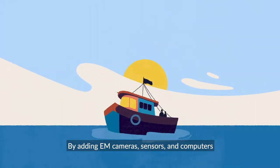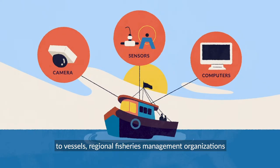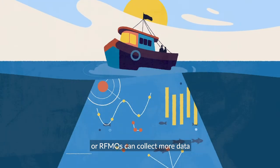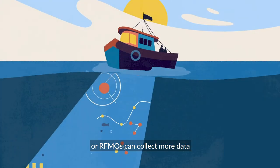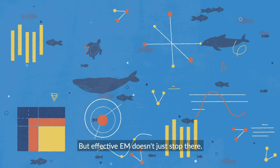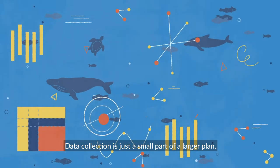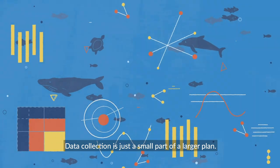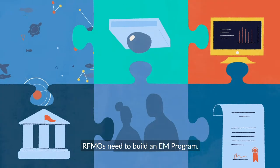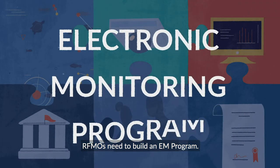By adding EM cameras, sensors and computers to vessels, regional fisheries management organisations, or RFMOs, can collect more data and boost its accuracy. But effective EM doesn't stop there. Data collection is just a small part of a larger plan. To truly gain more comprehensive oversight, RFMOs need to build an EM program.